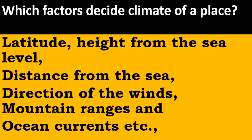Which factors decide the climate of a place? Latitude, height from sea level, distance from the sea, direction of winds, mountain ranges, and ocean currents.